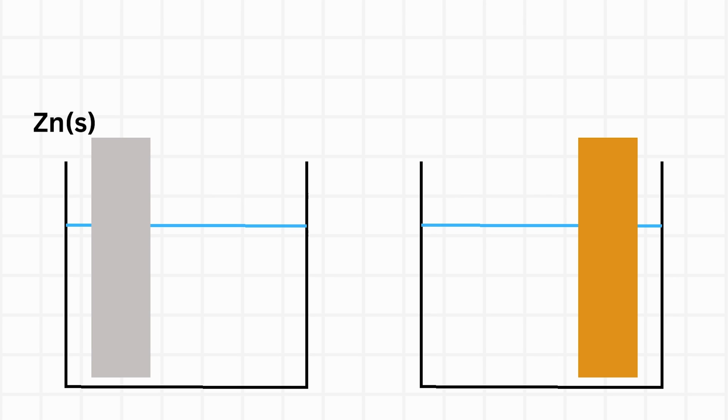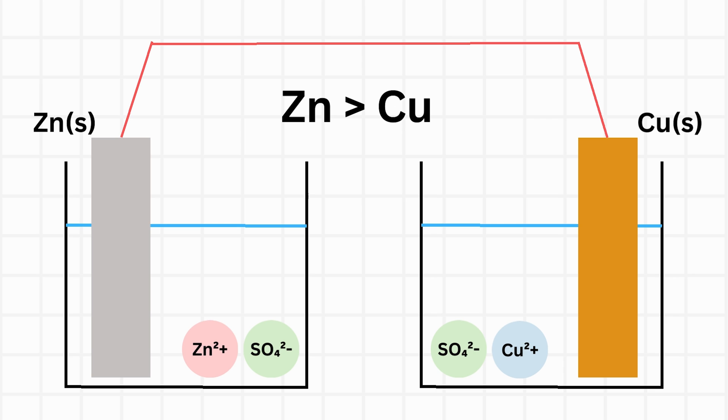This is Daniel cell. In the left beaker, there is a zinc plate and zinc sulfate solution. And the right beaker has a copper plate and copper sulfate solution. Two plates are connected by a wire. In this case, since zinc has higher reactivity than copper, this is the state of each element.